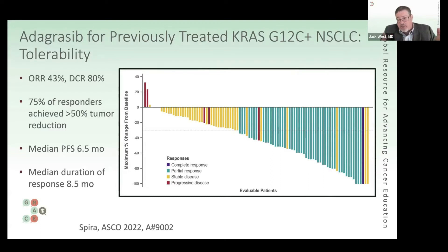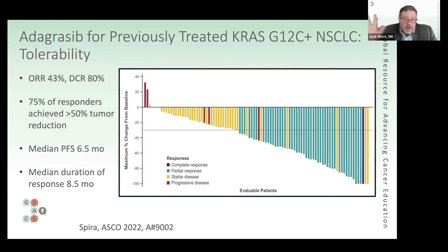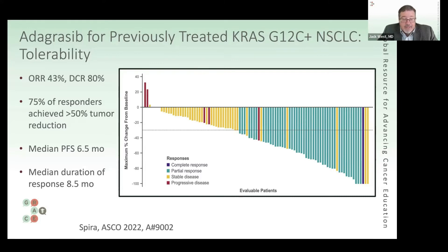It was called a partial or complete response — an objective response — in 43 percent of patients. That means a lot of patients had shrinkage that just wasn't quite enough to officially classify as a major response, or they had something else that grew a tiny bit. It's a complex system, but most patients had some shrinkage of their cancer, and many had quite significant shrinkage.